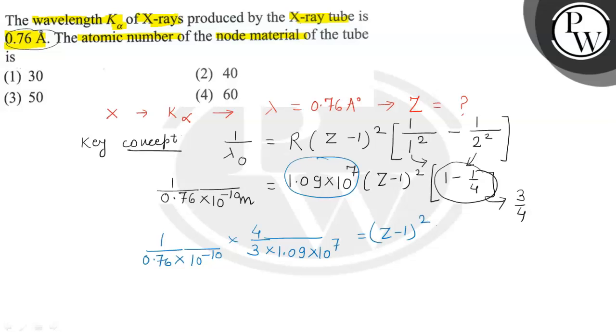Now when we solve this complete number, the answer is approximately 1600. So taking square root of both sides, Z minus 1 is equal to 40.